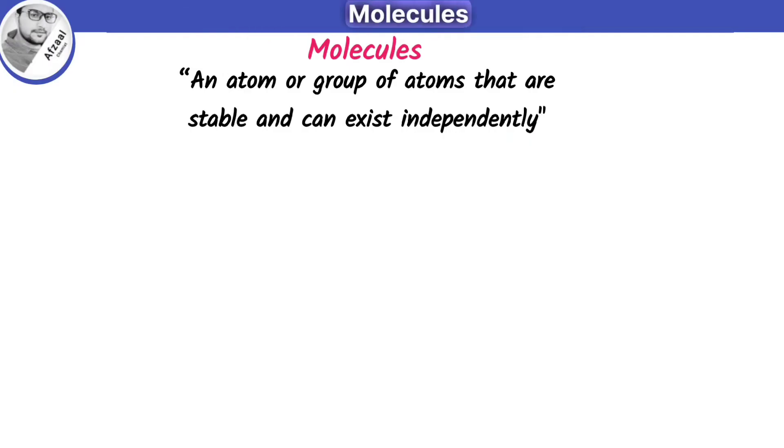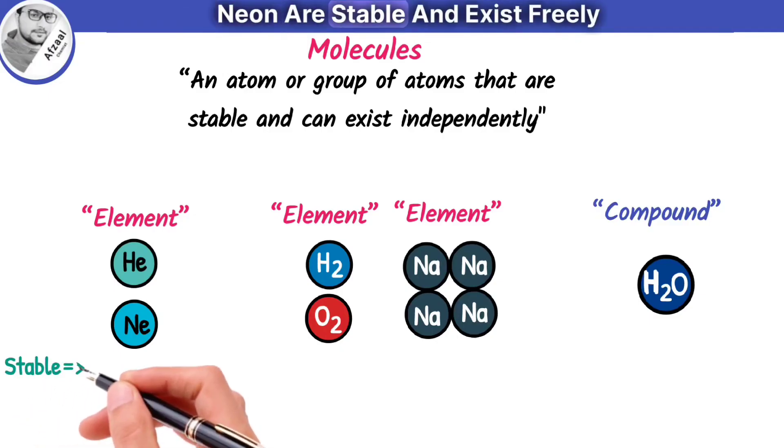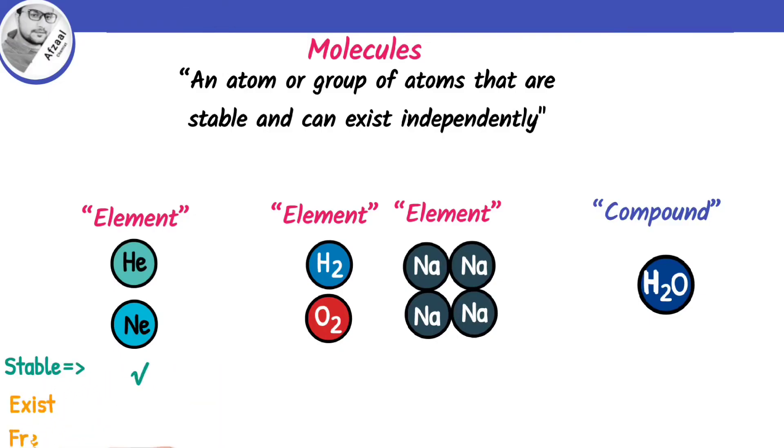Let me tell you which one of the following can be figured out as molecules. All noble gases like helium and neon are stable and exist freely, so we can say these are the molecules of helium and neon.